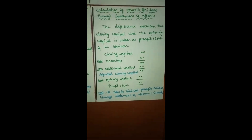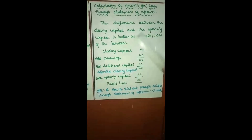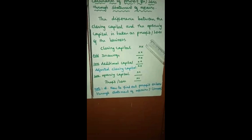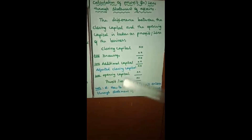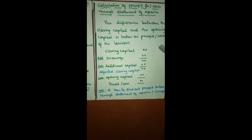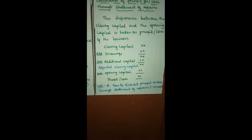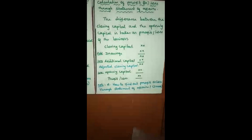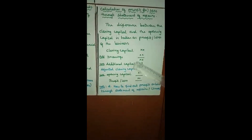The difference between the closing capital and the opening capital is taken as profit or loss of the business. Closing capital means the capital at year end. Opening capital means the capital at the start of the business. In the format: take the closing capital, add drawings — drawings means the amount drawn from the business for personal use, otherwise the closing capital will appear too low. Then deduct any additional capital introduced during the year.